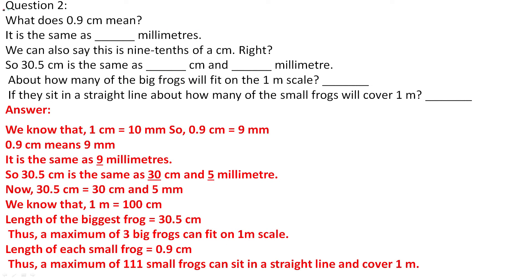Question number 2: What does 0.9 centimetre mean? It is the same as 9 millimetres. We can also say this is 9 tenths of a centimetre. So 30.5 centimetre is the same as 30 centimetre and 5 millimetre. About how many big frogs will fit on a 1 metre scale? And if they fit in a straight line, about how many of the smallest frogs will cover 1 metre long?